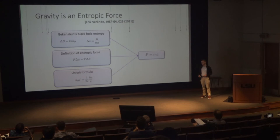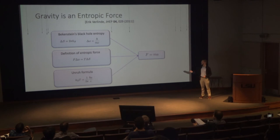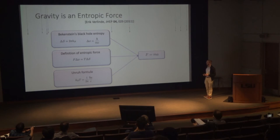Eric Verlinde proposed in 2011 that perhaps gravity could be an entropic force. One of his motivating arguments takes insights from black hole entropy. Jacob Bekenstein argues that if we have an object of mass m that comes near a black hole, when this object comes within one Compton wavelength — delta x — of that black hole, it is effectively absorbed.